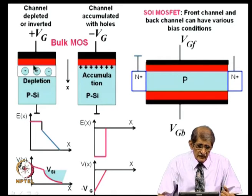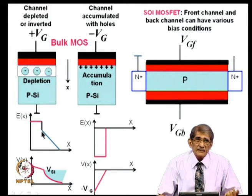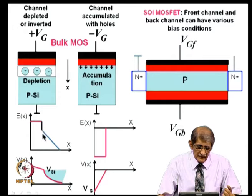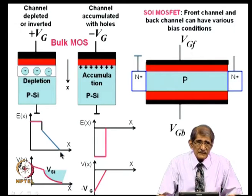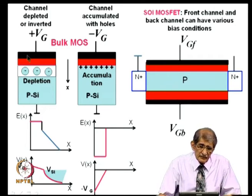The voltage drop across the oxide leads to a constant electric field. The electric field at the oxide–silicon interface will be different due to discontinuity, because the flux is continuous: epsilon_oxide × E_oxide = epsilon_silicon × E_silicon. This field will be about 3 times smaller in silicon, because the permittivity of silicon is about 12 and that of oxide is about 4 — ratio is 3.